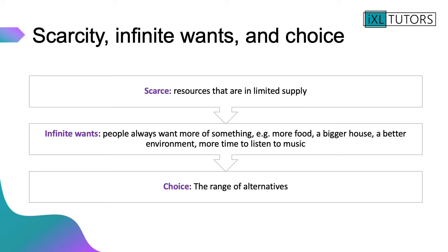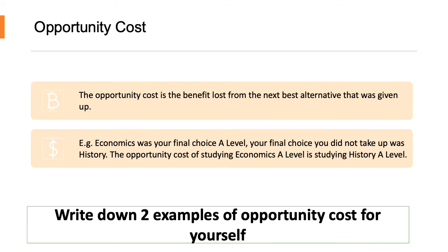Finally, choice is the last part of the economic problem — choices where you have a range of alternatives. This brings us to the concept of opportunity cost: the benefit lost from the next best alternative that was given up. For example, if economics was your final A-level choice and history was the subject you did not take, the opportunity cost of studying economics A-level is the benefit you could have gained from studying history. Write down two examples of opportunity cost for yourself.